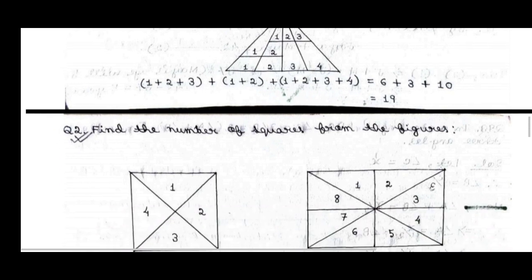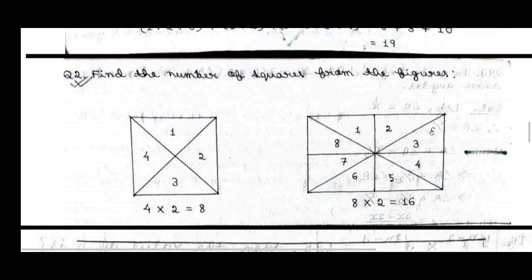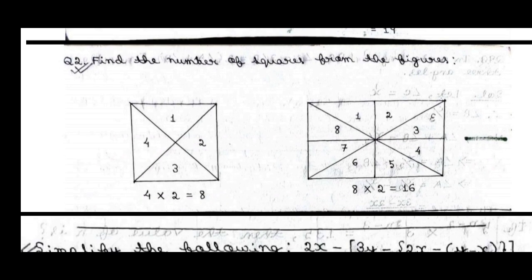Next is finding the number of squares from the figures. How many squares do we count? 1, 2, 3, 4 — meaning 4 into 2. Then next: 1, 2, 3, 4, 5, 6, 7, 8 — then 8 into 2 equals 16. So we need to solve these squares.